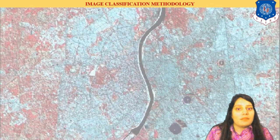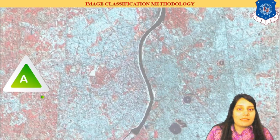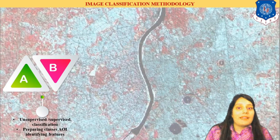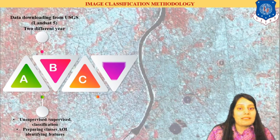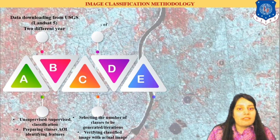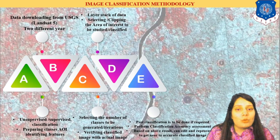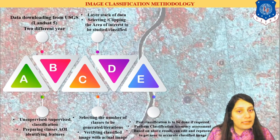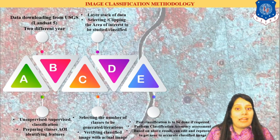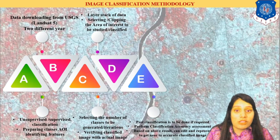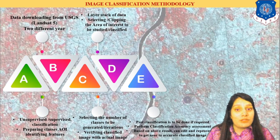Let us discuss the image classification methodology, which is very important — how image classification is done, what analysis is behind it, and what techniques are applied. First, you have to select the area and the satellite data you are downloading. After downloading, you take the data for two years. Then you do the layer stacking of the data, since the data has a number of bands. After stacking, you clip the area or region you want to classify — identifying how much vegetation or water body area it contains. Then you select the classification methodology.